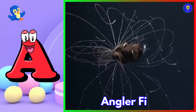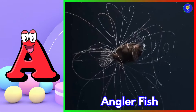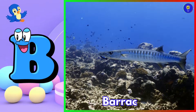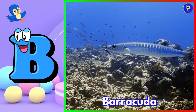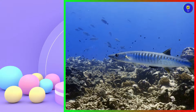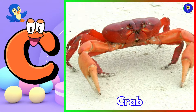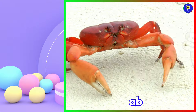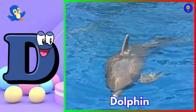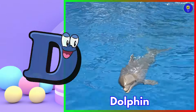A is for anglerfish. Ah, anglerfish. B is for barracuda. Buh, barracuda. C is for crab. Kuh, crab. D is for dolphin. Duh, dolphin.